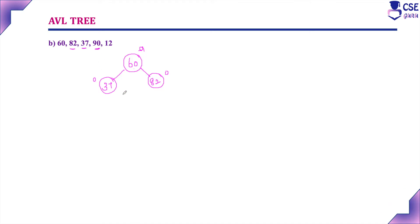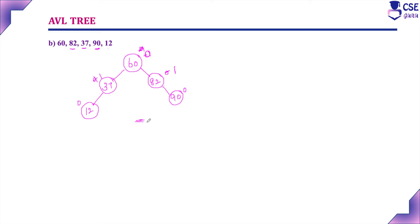Next, insert 90. 90 is greater than 60 — go to its right child. 90 is greater than 82 — insert 90 as the right child. Balance factor: 0, -1, and -1. Next, insert 12. 12 is less than 60 — go to its left child. 12 is less than 37 — insert 12 as its left child. Now check the balance factor: this is 0, +1, and 0 for the left side; the right side is balanced with -1. Everywhere it is balanced. No rotation is needed. This is an AVL tree — it satisfies the binary search tree and balance factor properties.